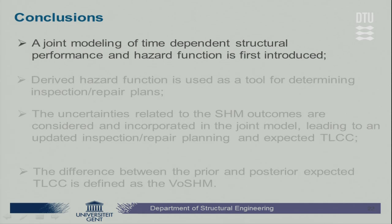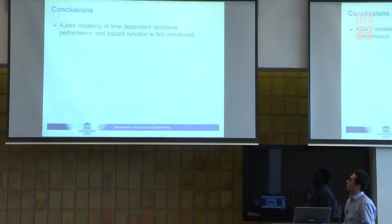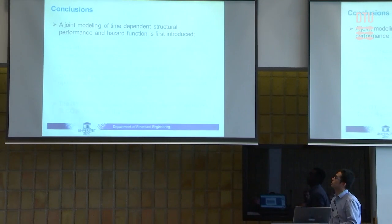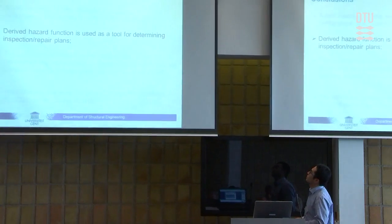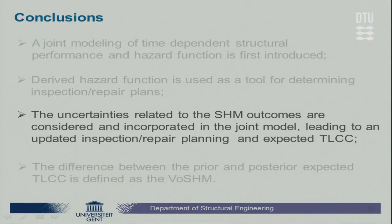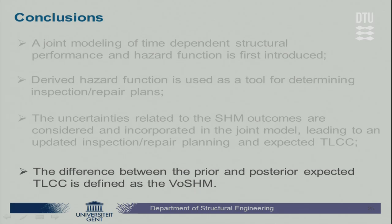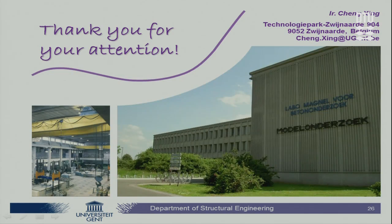In conclusion: first, a joint model of the time-dependent structural performance and hazard function is introduced. Based on the derived hazard function, it is used as a tool for determining the inspection and repair plan. The uncertainty related to SHM outcomes is considered and incorporated in the joint model, leading to updates of the inspection and repair planning and expected total lifecycle cost. Finally, the difference between the prior and posterior expected total lifecycle cost is defined as the value of SHM. Thank you for your attention.